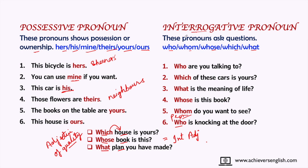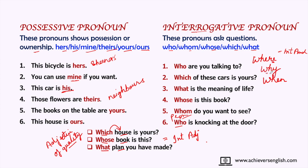One more thing to remember: who, whom, whose, which, and that are interrogative pronouns only when they replace a noun in the answer. If you make a question with 'where,' 'why,' or 'when,' it becomes an interrogative adverb because the answer doesn't replace a noun. For example, 'Where is my dog?' — the answer is 'in the park,' not a noun replacement. But 'Which of these cars is yours?' — the answer replaces a noun, so 'which' is an interrogative pronoun.